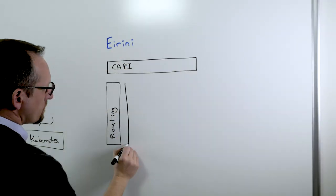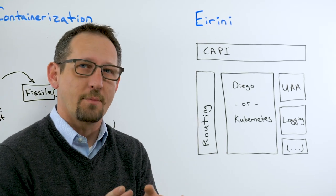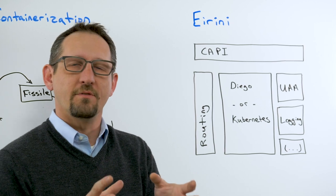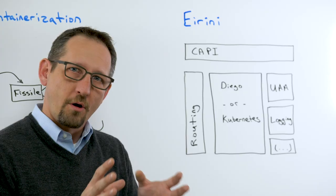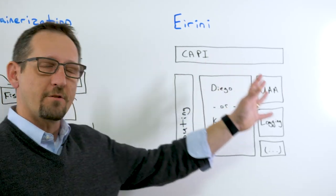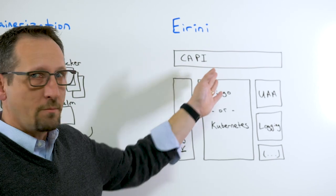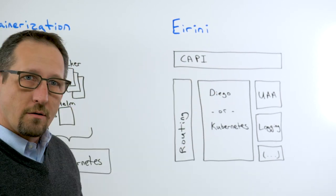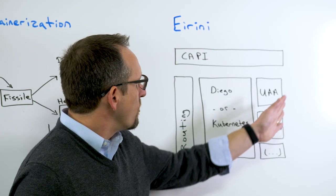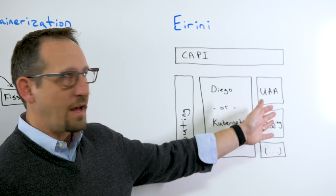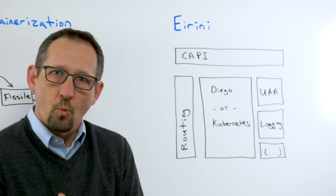All right, now the third project, this one's called Eirini. This is when we tear inside the Cloud Foundry application runtime, that PaaS part of the Cloud Foundry technology stack. Inside that PaaS part of the Cloud Foundry stack, we have lots of different smaller projects. We have the Cloud Controller API or the CAPI project, routing which is how end users talk to applications deployed in the CF environment, identity management through UAA, logging, and all of the other projects that make that Cloud Foundry app runtime project work.